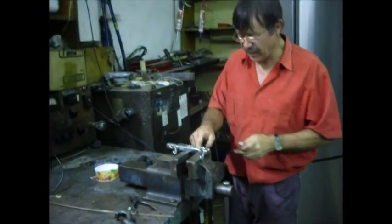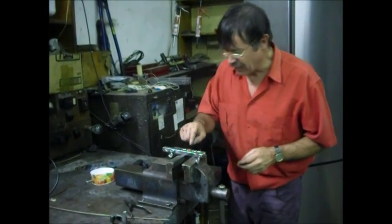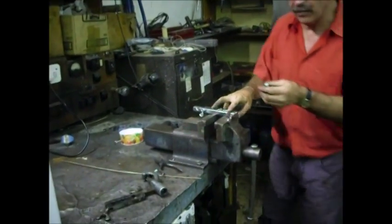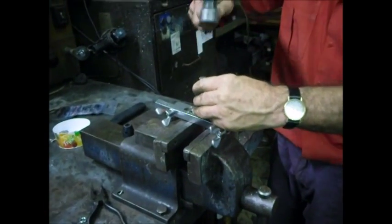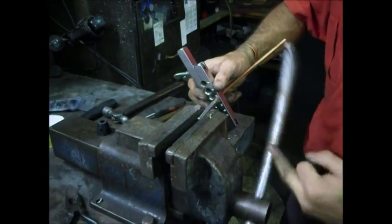This copper pipe has got an internal thickness of a quarter inch and we clamp it in a flaring block and we swage it. We stretch the inside open by hammering this quarter inch swager into it.